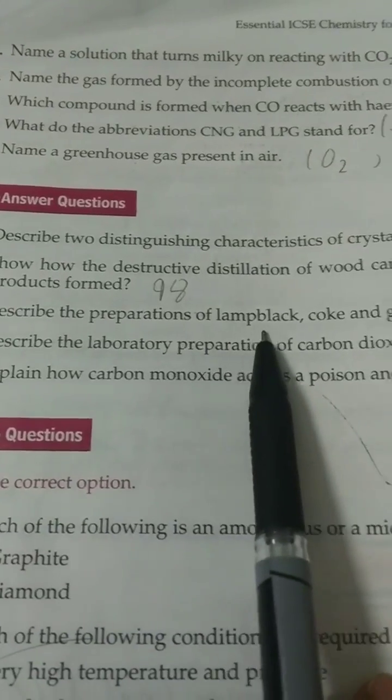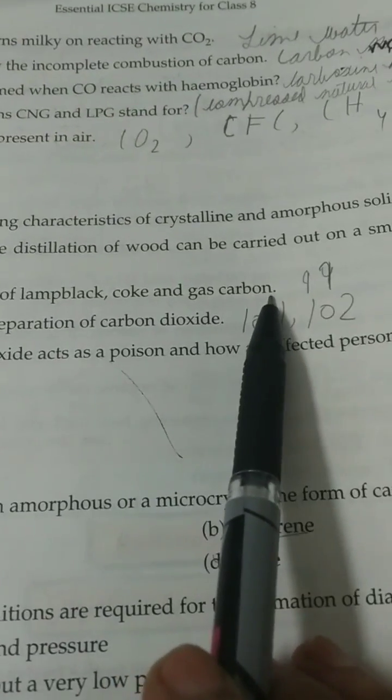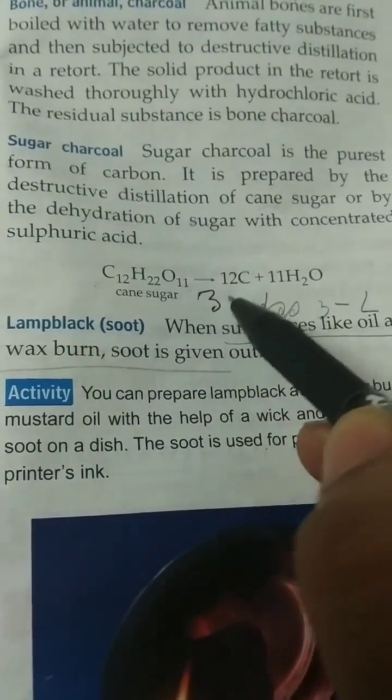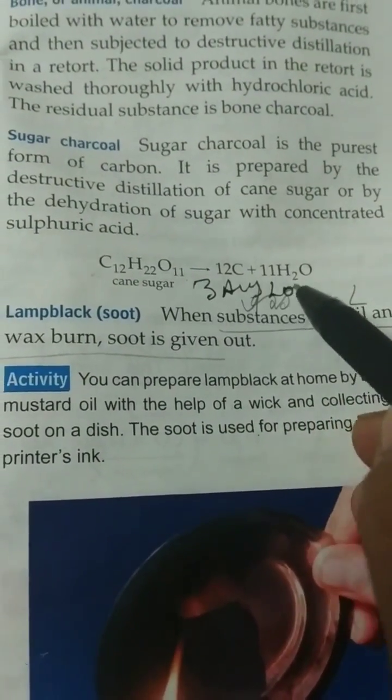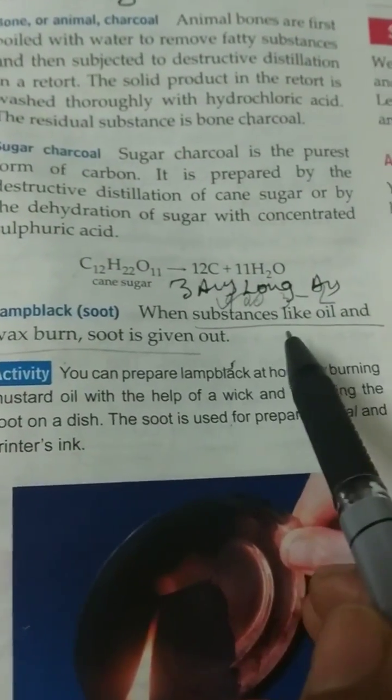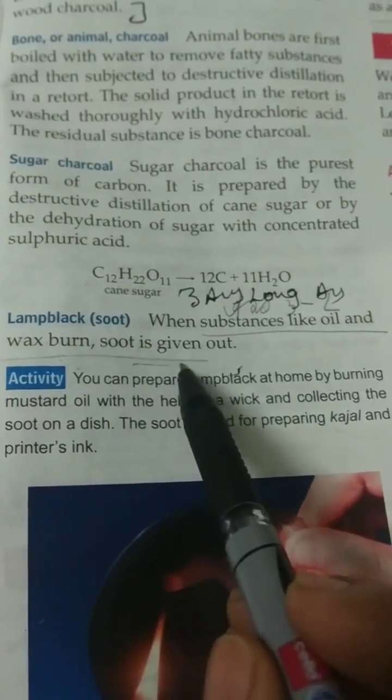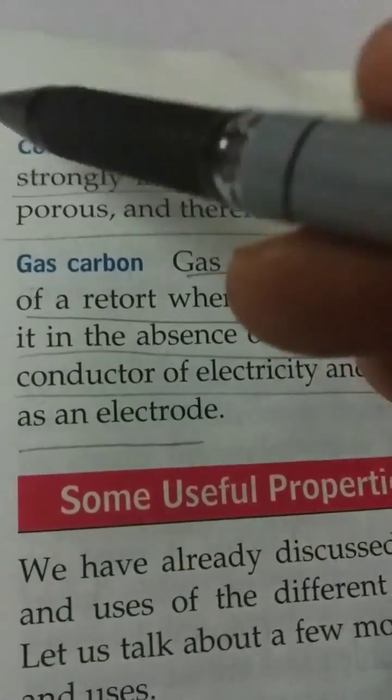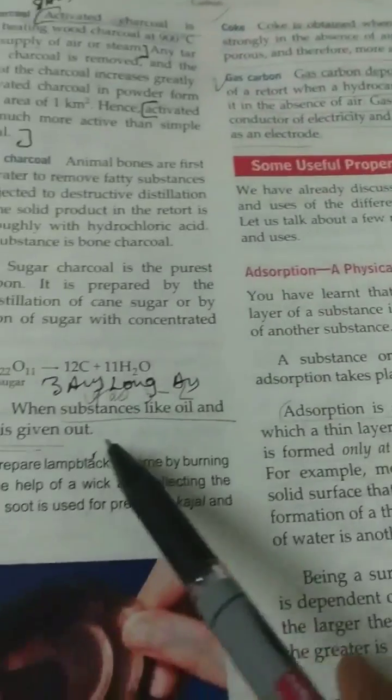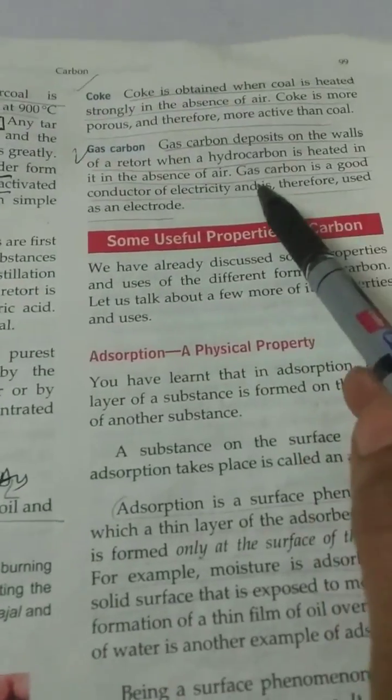Third, describe the preparation of lampblack, coke and gas carbon. Page number 99. It is the third long answer. Lampblack: when substances like oil and wax burn, soot is given out. Then coke and gas carbon. These three you will write in the third answer.